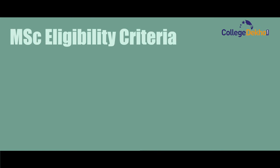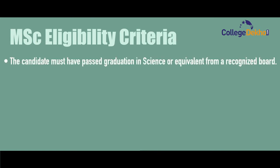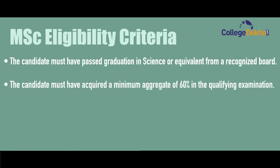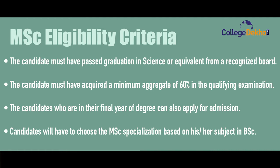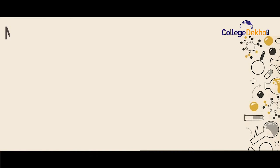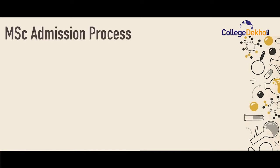Moving ahead to the MSc eligibility criteria: candidates must have passed graduation in science or equivalent from a recognized board. The candidate must have acquired a minimum aggregate of 60 percent in the qualifying examination. Candidates in their final year of degree can also apply for admissions. Candidates will have to choose the MSc specialization based on their subject in BSc.